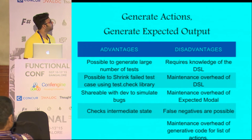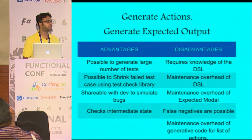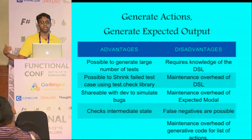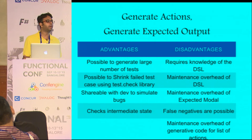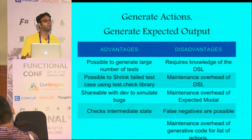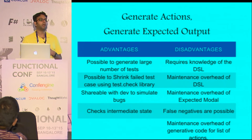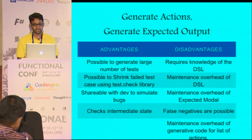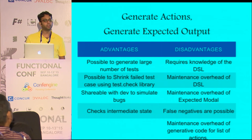With generated actions and generated expected output, one great advantage is you can generate a large number of tests and combinations. One possibility you can run into: if I generate say a hundred-action test case and it fails, I don't know what exactly failed or what was the failure. Do I really need a hundred actions, or is there a smaller shrink case that will still simulate this bug? There is something called spec.check which will allow you to shrink your output into a smaller test case, which is really great — but it becomes hard, you need knowledge of how to write it.